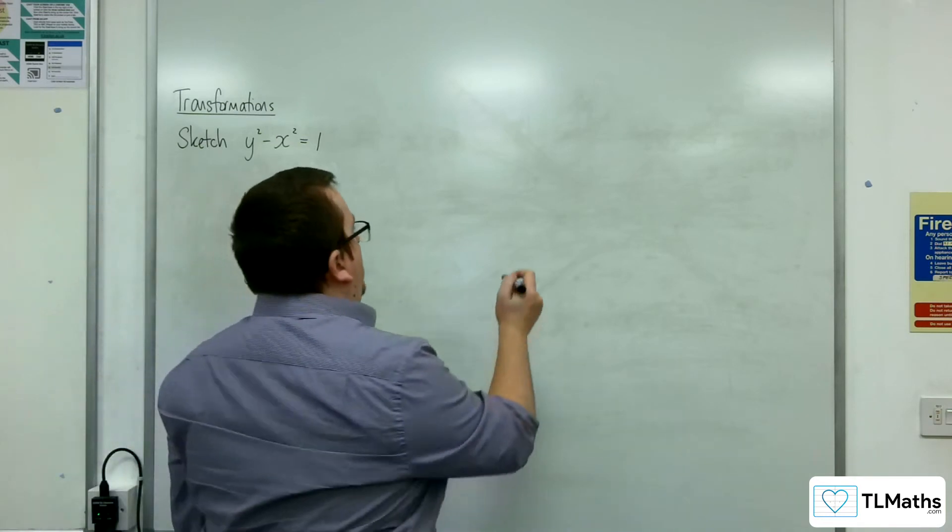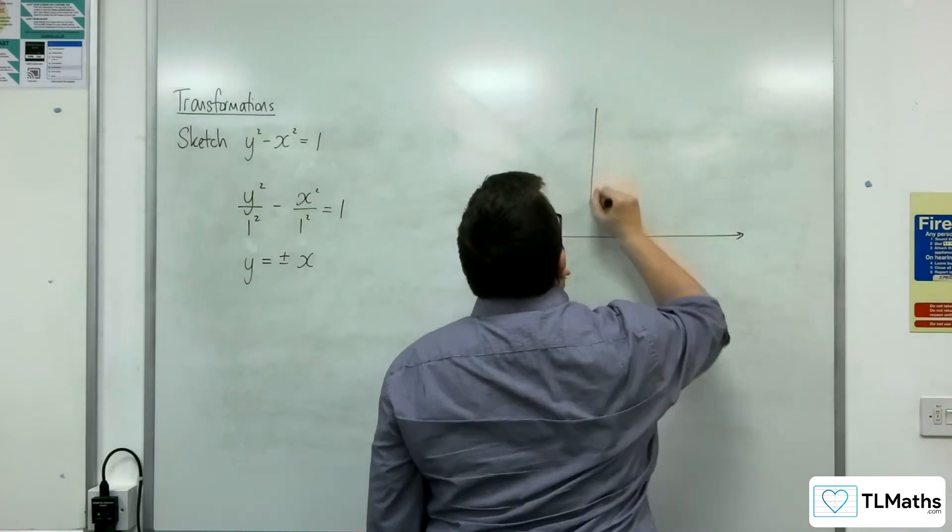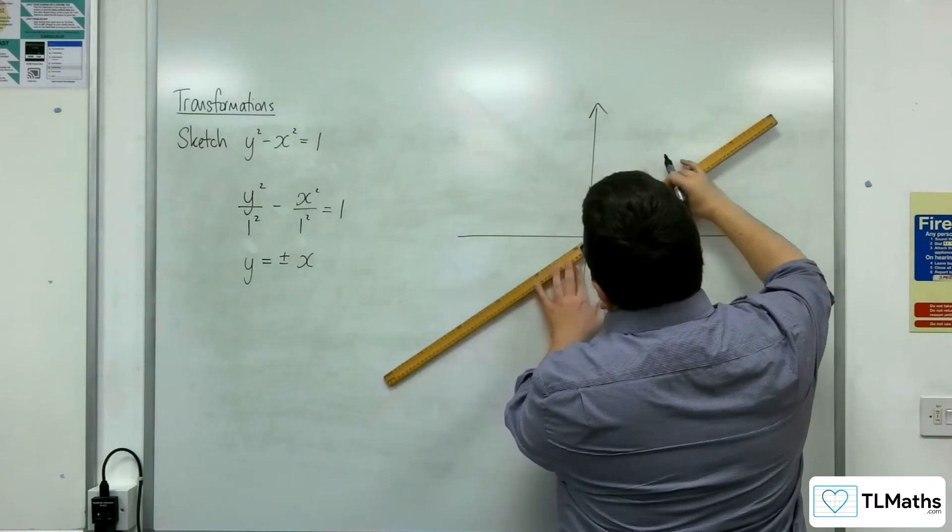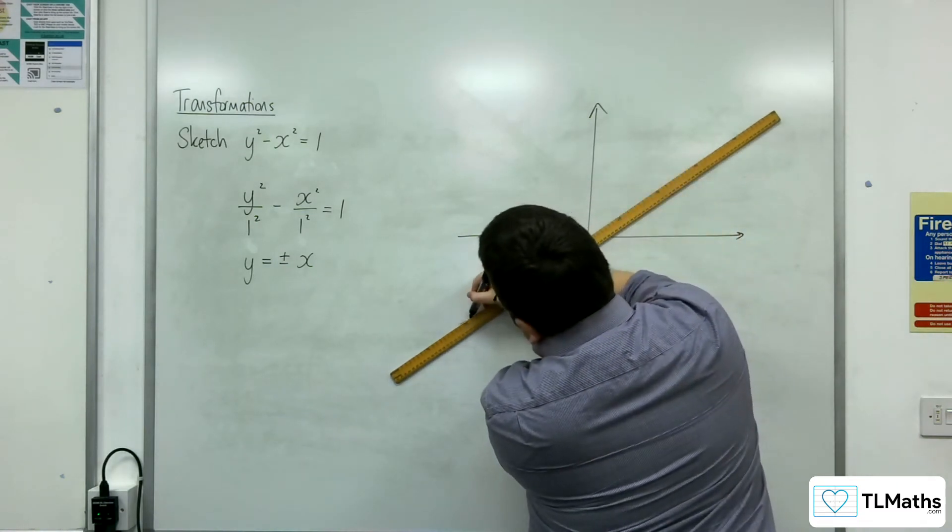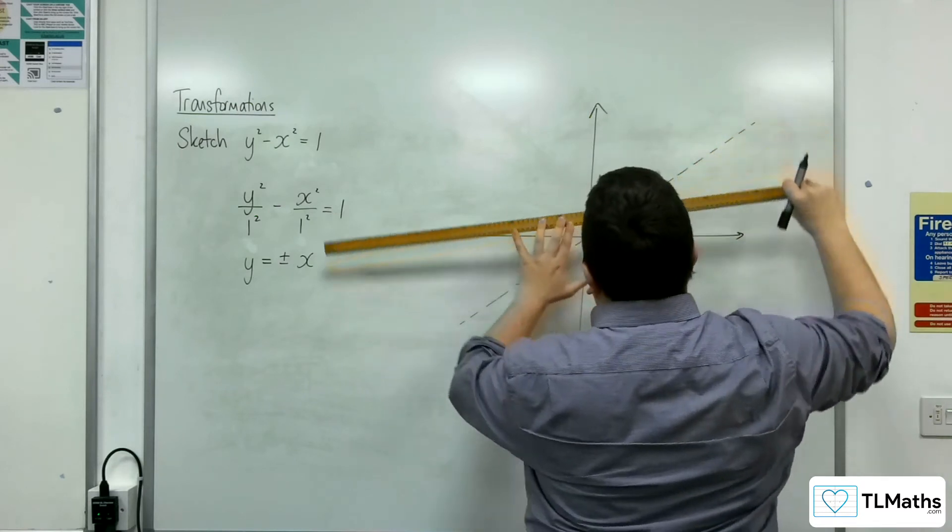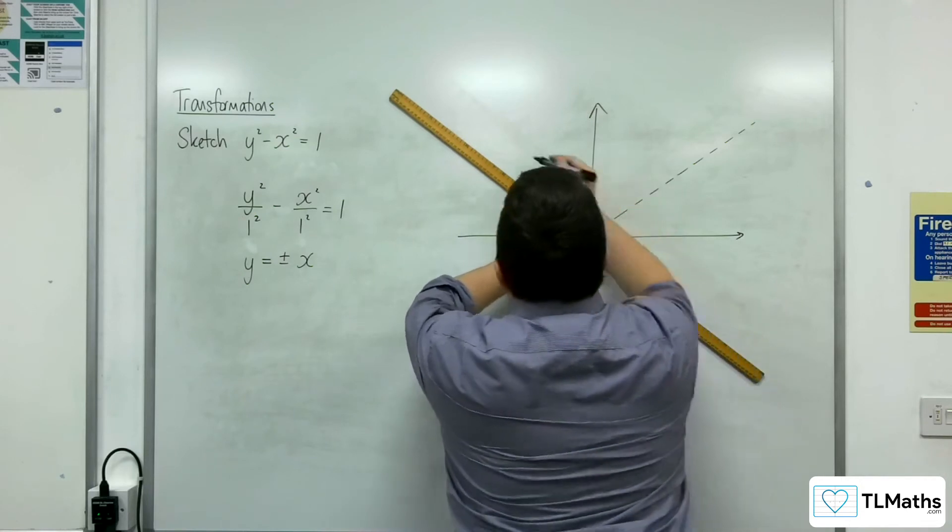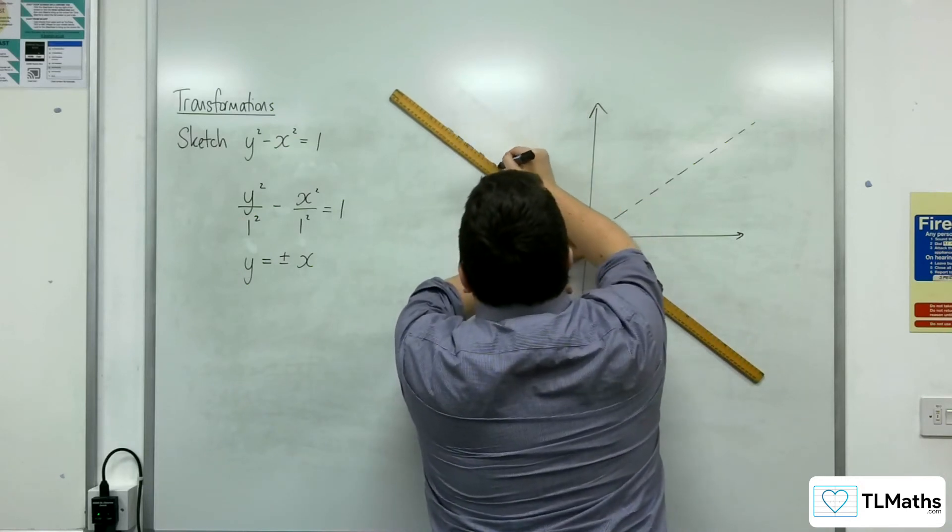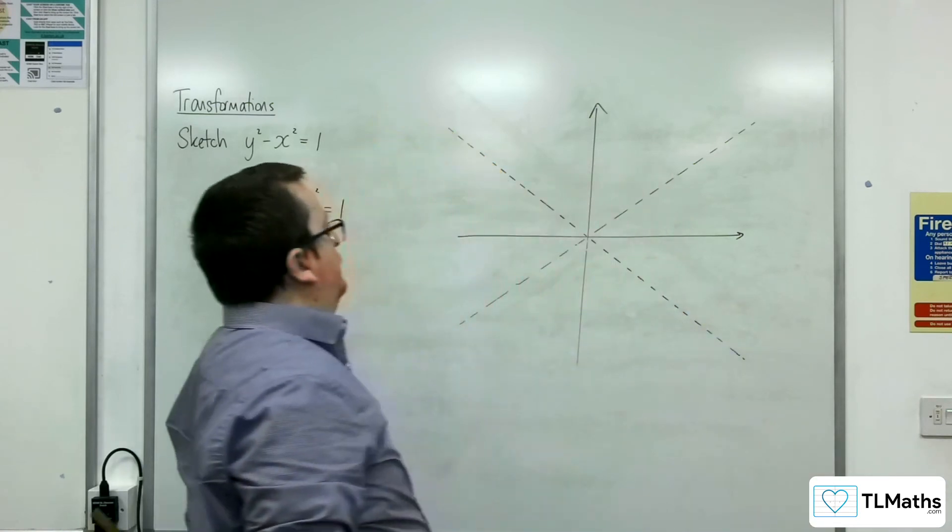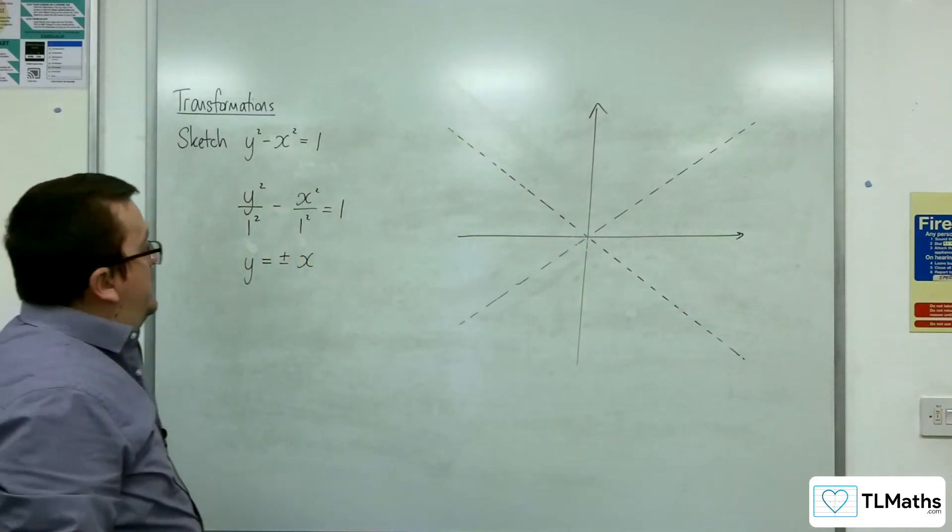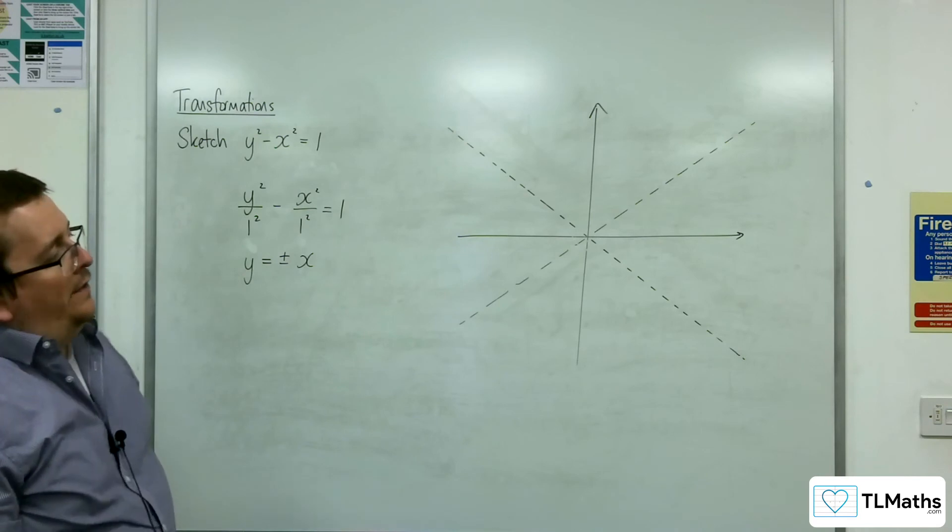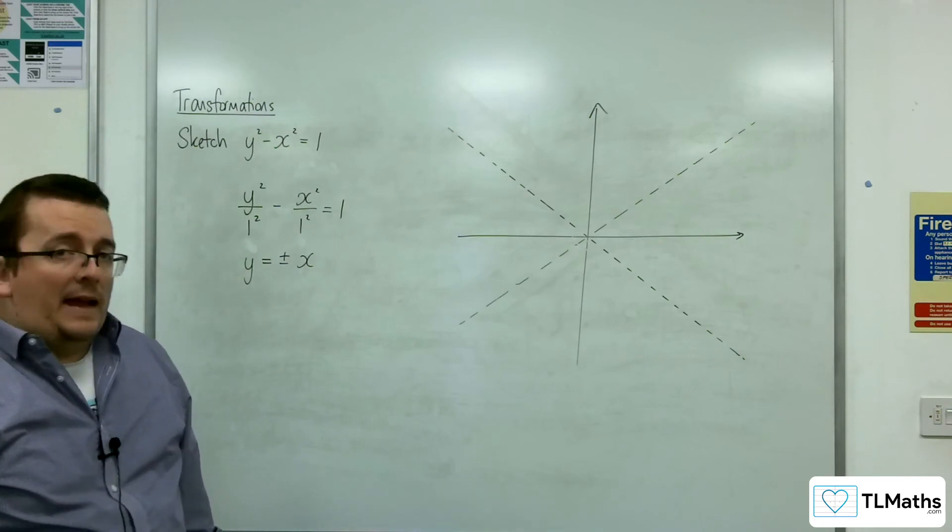So, y equals plus or minus x are the asymptotes for this graph. So, let's draw those in.